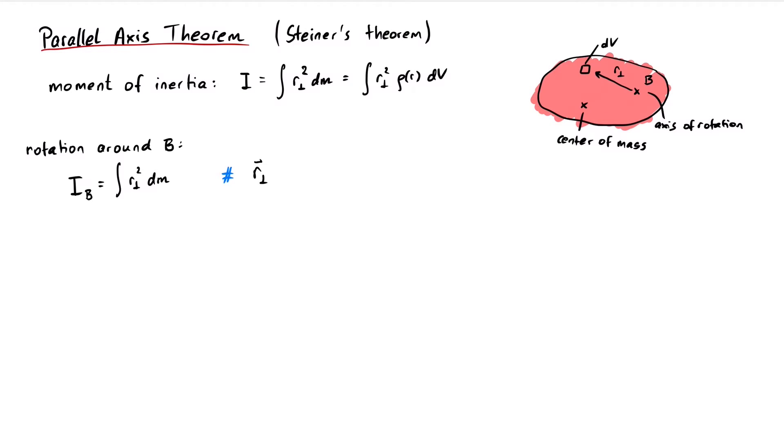We write the vector r perpendicular as a plus r cv, where a points from the axis b to the center of mass, and r cv points from the center of mass to the volume element dv.